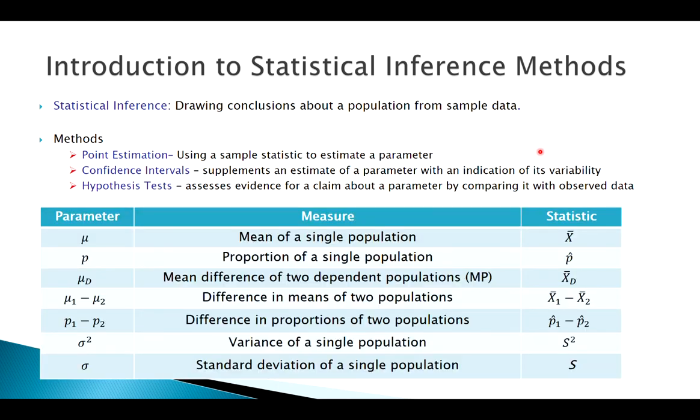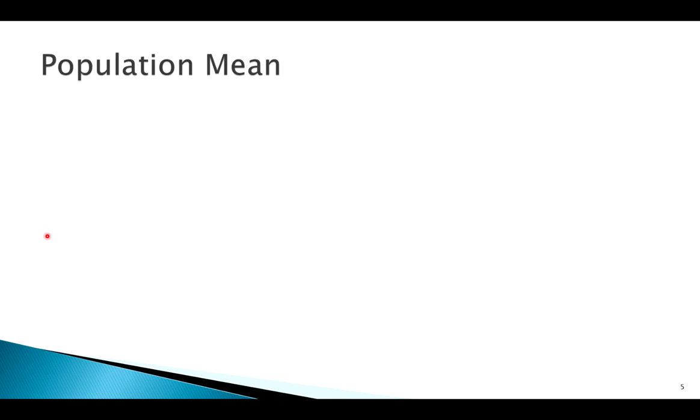But eventually what we want to be able to do is for all of these different methods, like our sample mean or x̄ might be a point estimate of our population mean μ. For all of these different parameters of interest that we might see throughout the rest of the course, we want to be able to apply all of these different methods down this list as we go. So we're going to start at the top of the list. Our parameter of interest is μ. So that's where we're going to start because that's the easiest.